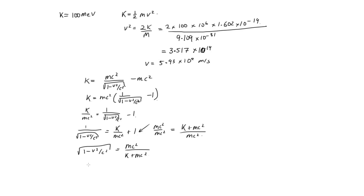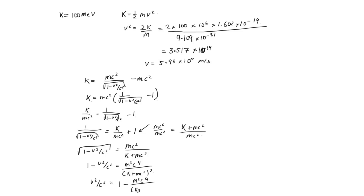We can write that 1 as mc squared over mc squared, so this becomes K plus mc squared, all over mc squared. Inverting both sides, the square root of 1 minus v squared over c squared equals mc squared over (K plus mc squared). Squaring everything: 1 minus v squared over c squared equals m squared c to the 4, over (K plus mc squared) squared. So v squared over c squared equals 1 minus m squared c to the 4 over (K plus mc squared) squared.